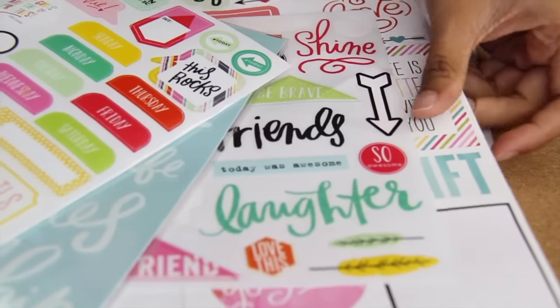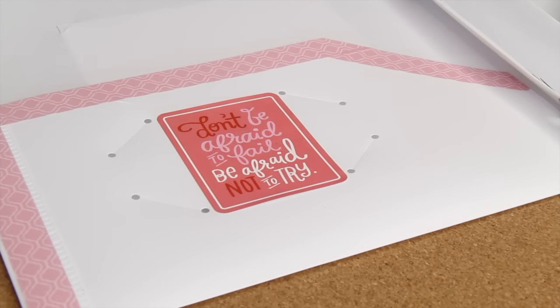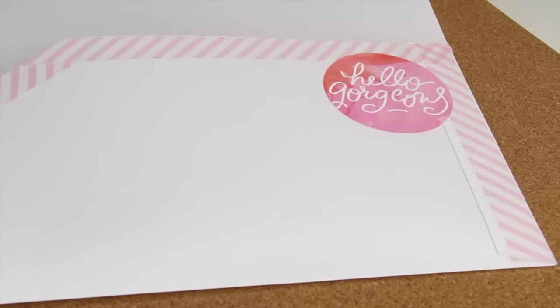You can either write directly on it or you can add some sticker labels and some fun stickers like I did here. Don't forget the inside - you can always decorate the pockets as well with some washi tape and more stickers.